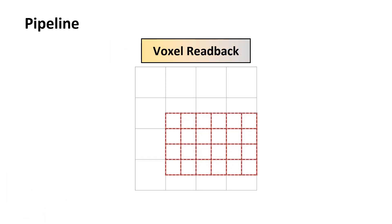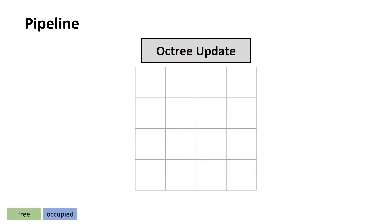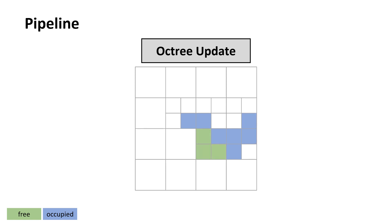Afterwards, all voxels with occupancy information are read from the GPU back to the CPU. Finally, the occupancy probability and octree are updated.